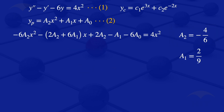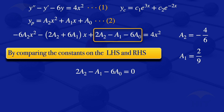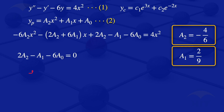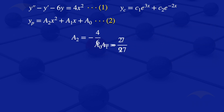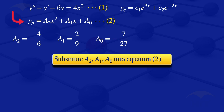Comparing the constant terms: 2a2 minus a1 minus 6a0 equals 0. Substituting a2 equals minus 4/6 and a1 equals 2/9, we solve for a0 and obtain a0 equals minus 7 over 27. Substituting all three values back into equation 2, our particular solution is: minus 4/6·x squared plus 2/9·x minus 7/27.